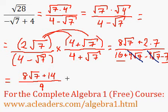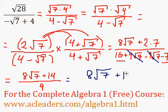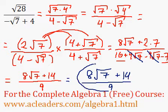I'm just going to write the final answer into a different color. So, 8 root 7 plus 14 all over 9 is as far as we can simplify this fraction right here. That's it.